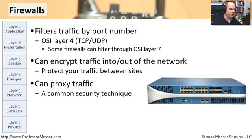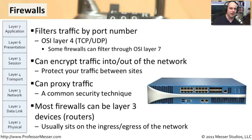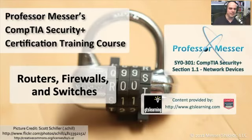Most firewalls you're going to find can also be layer three devices. So you will very often see the firewall on the edge of the network as the internet is coming into it, performing routing and network address translation for us. Many times you don't have to have a layer three router right behind it — the firewall is simply doing all of that routing. Because it's right there on the edge, it can route to the internet, route to a DMZ, and route to our internal network as if it were a standalone router. Think of it as having routing functionality with all of these great firewalling and security technologies built right in.